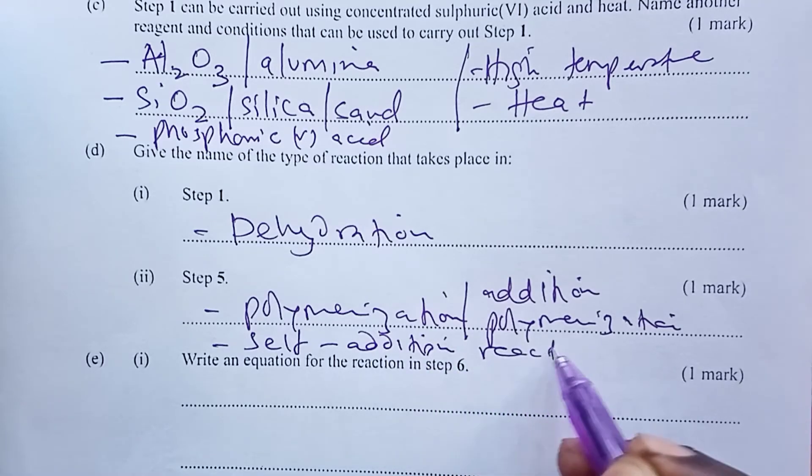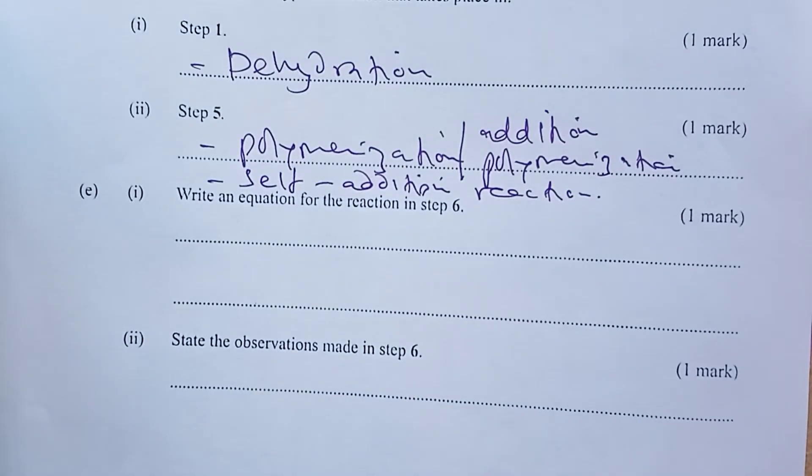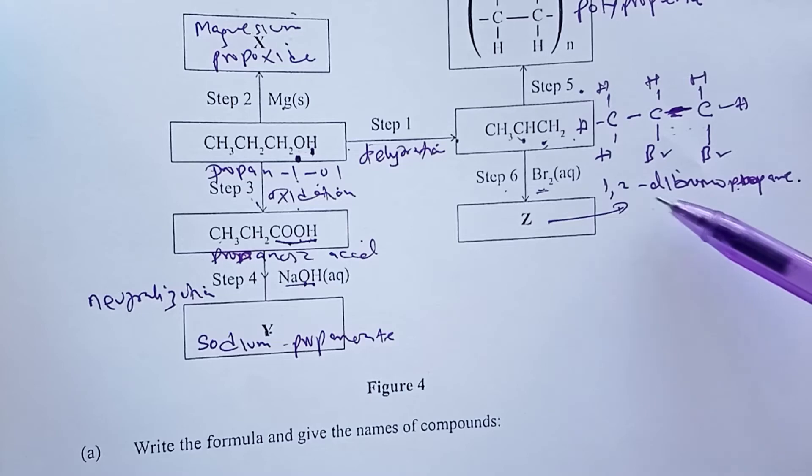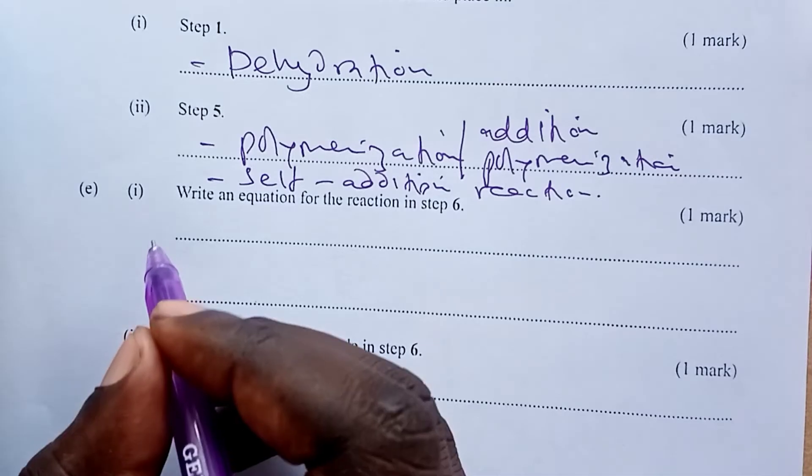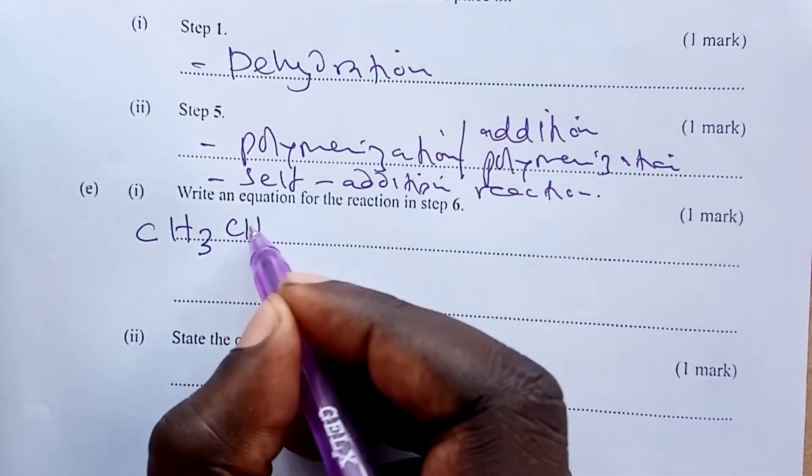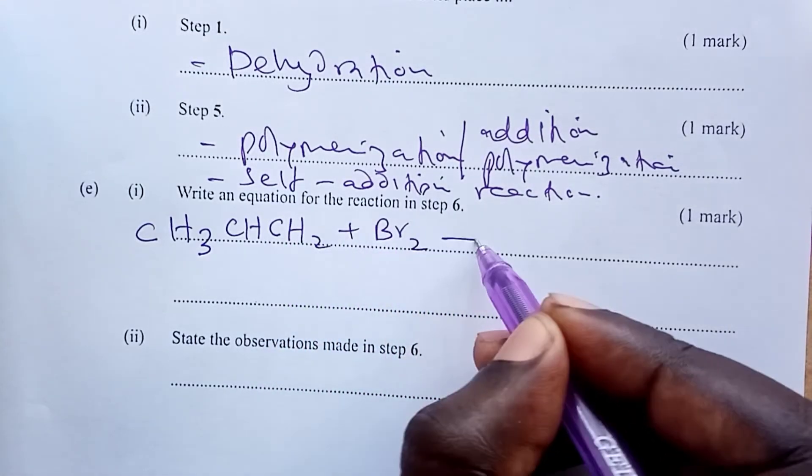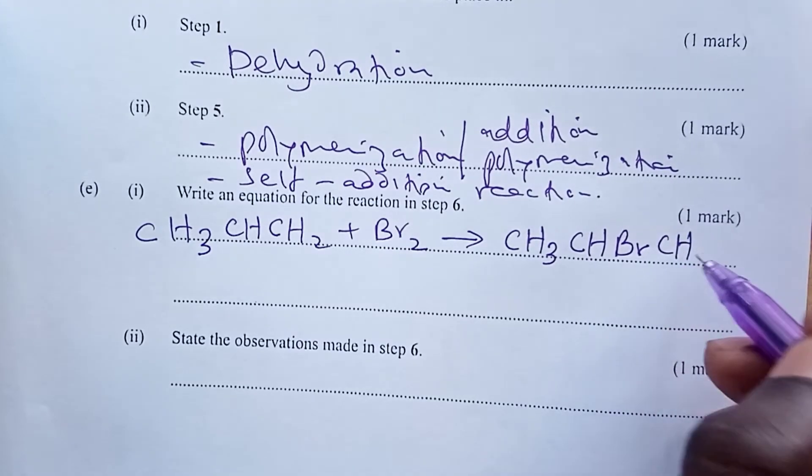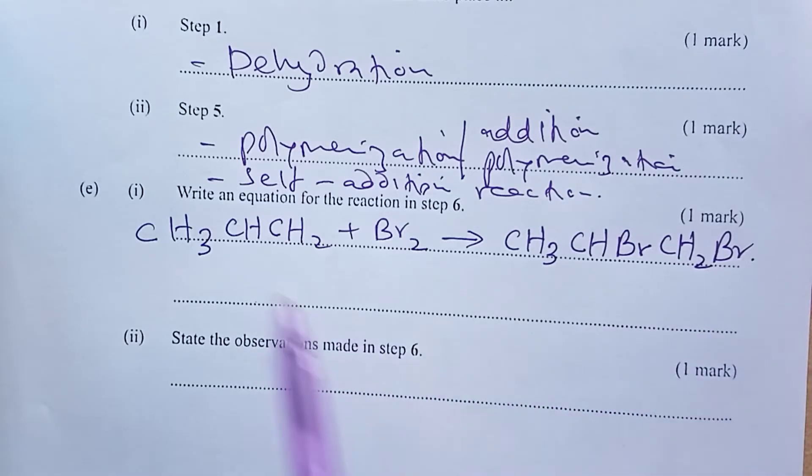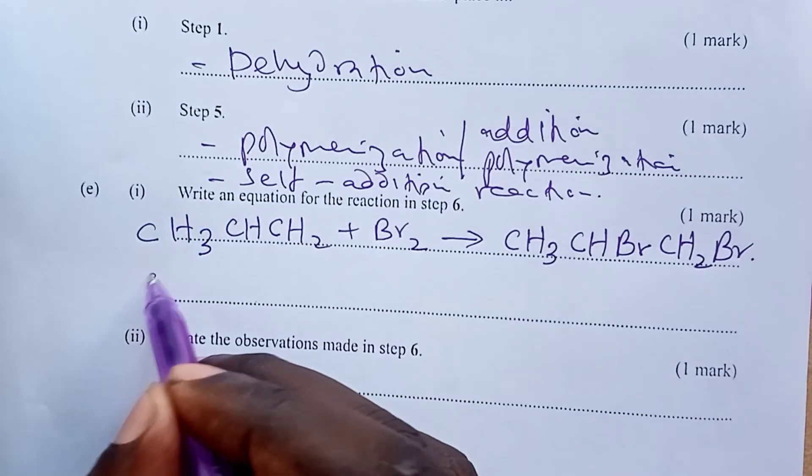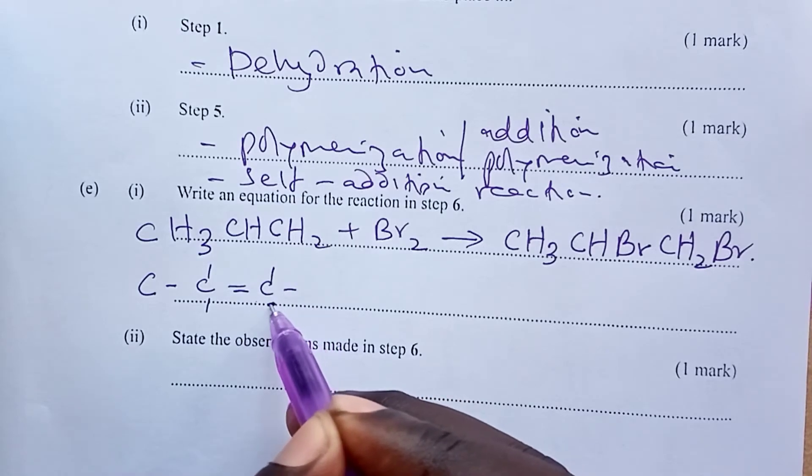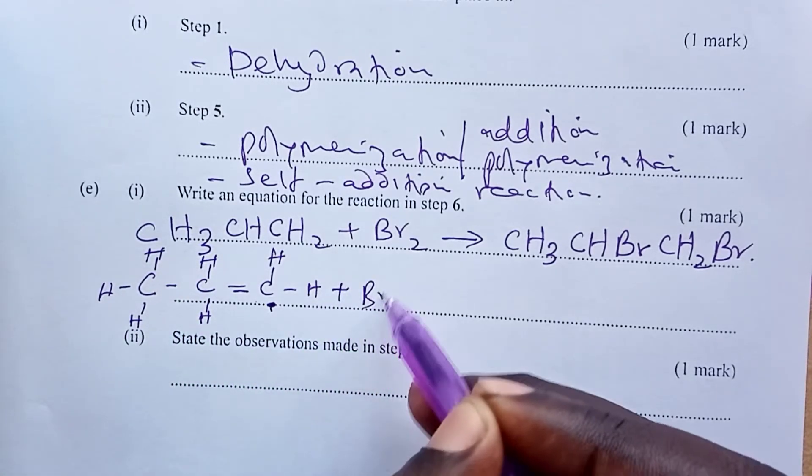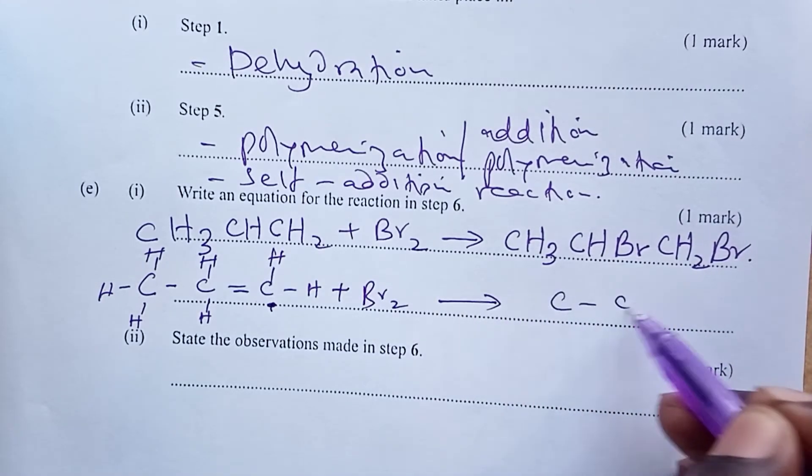Self-addition reaction. All these can stand in for step five. Write an equation for the reaction in step six. Step six: we are reacting our propene with bromine to form 1,2-dibromopropane. So the equation in condensed form becomes CH3CHCH2 plus bromine, then you get CH3CHBrCH2Br. If you can't follow it in this condensed form, we allow you to open it up, like we have done earlier. Sorry, this one has two hydrogens. So this is your original molecule. You are adding bromine to it. So when you do so, we shall break the double bond.